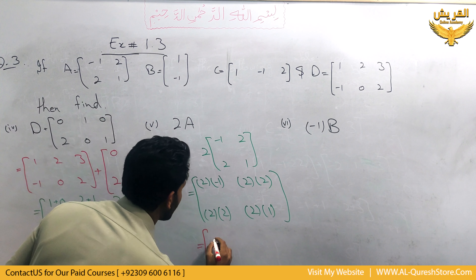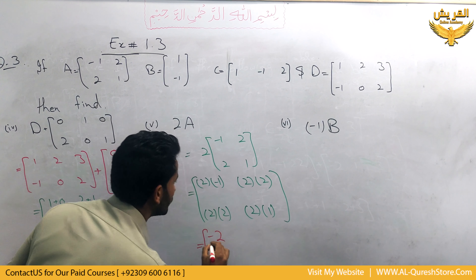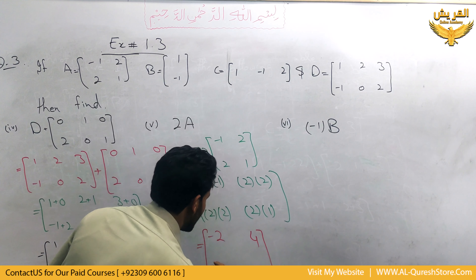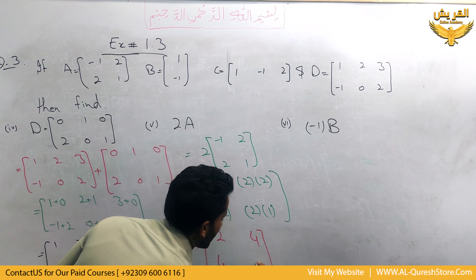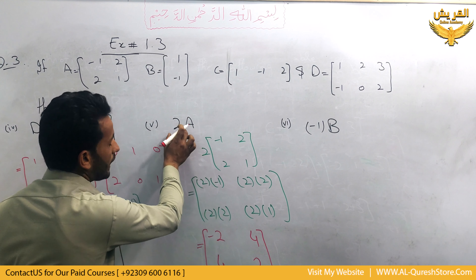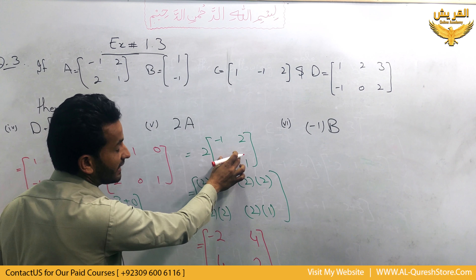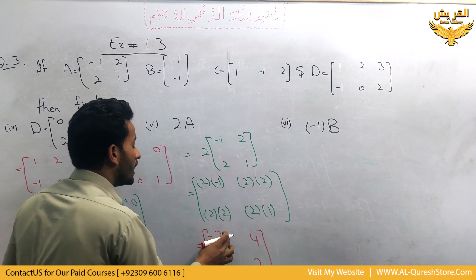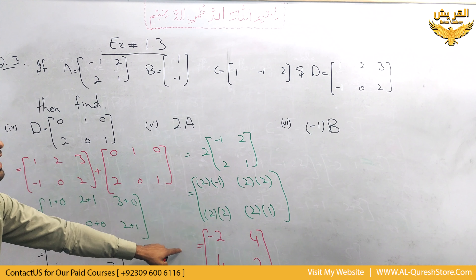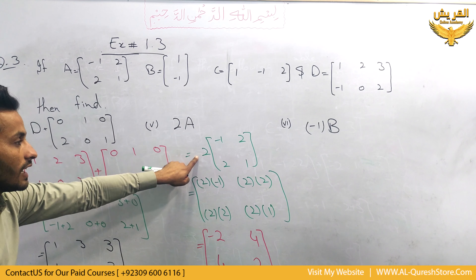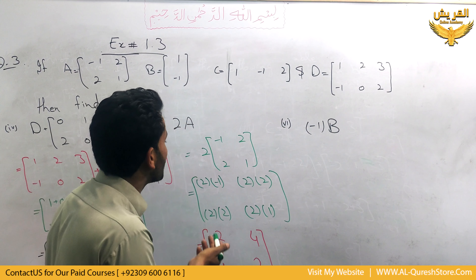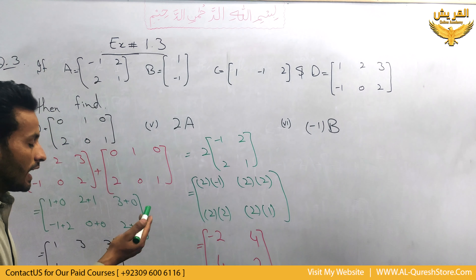2 multiplied by minus 1 becomes minus 2; 2 multiplied by 2 is 4; 2 multiplied by 2 is 4; and 2 multiplied by 1 becomes 2. So the answer of 2A is: minus 2, 4, 4, 2. The scalar number 2 is multiplied with all elements of matrix A — this scalar can be any real number.